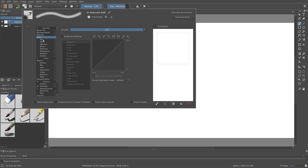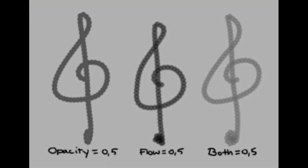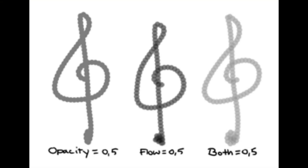We can do the same with flow and size. I haven't spoken about flow yet. Suffice it to say that flow is like having a ballpoint pen. If your pen is almost out of ink and the lines are very pale, that means the flow is very low. If your pen is completely full and a bit broken and the ink flows out very copiously, then the flow is high.